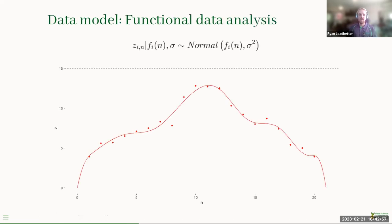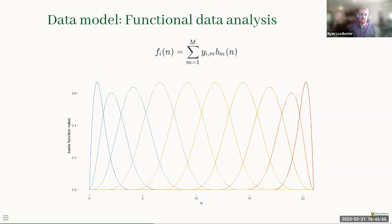For the data model, we take a functional data analysis methodology — we assume the data comes from a smooth underlying latent function, and we're getting noisy observations of that function at discrete locations. From a practical point of view this makes sense for belt wear, because we can assume the wear profile of the belt is smooth, and the ultrasonic thickness measurements at different locations will have some amount of noise. So we have a smooth underlying function fi with some measurement error defined by sigma.